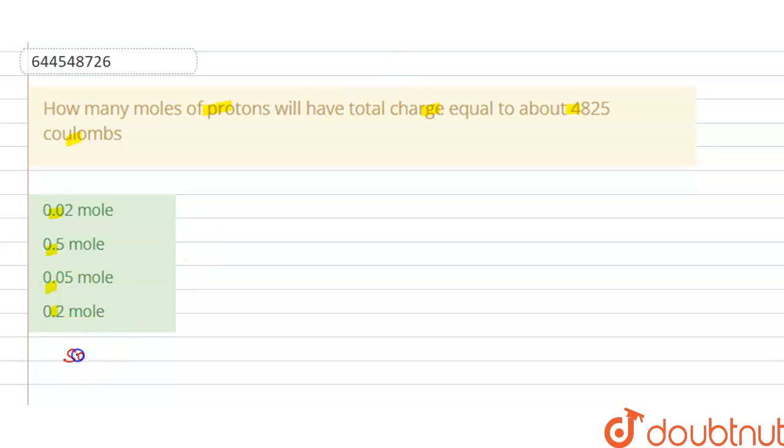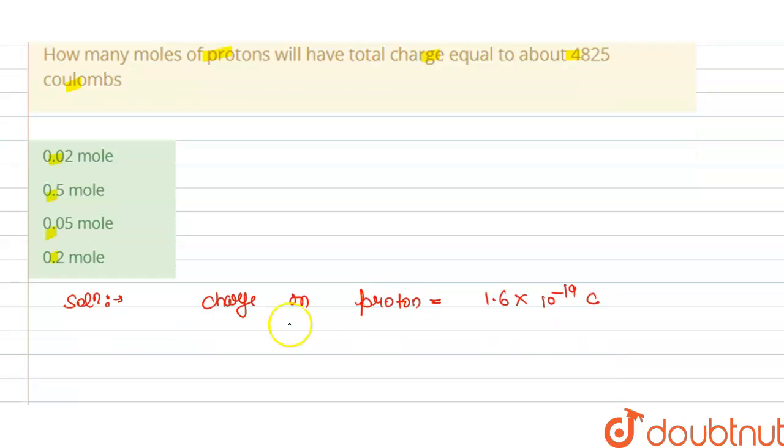So the solution of this question is: we know that charge on proton is equals to 1.6 into 10 power minus 19 coulombs, and we know that 1 coulomb charge